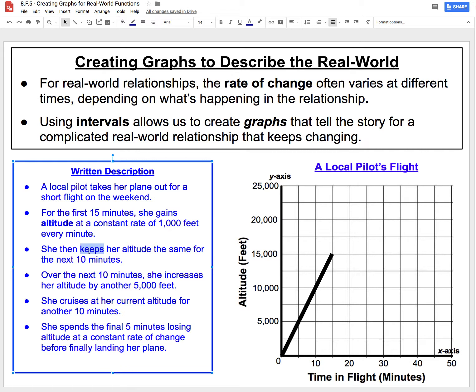We're then told she keeps the same altitude for the next 10 minutes. So once she gets up to 15,000 feet, from minute 15 all the way to minute 25, she's going to just stay at the same height. So we're going to insert another line, and this time it's going to have a slope of 0. For 10 minutes she doesn't go up, she doesn't go down in height, she's just flying around at 15,000 feet.